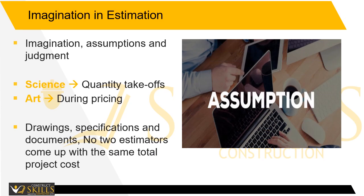Imagination in estimation. Estimating is both objective and subjective. It involves formulas and calculations to get lengths, areas, volumes, or weights, but it also requires imagination, assumptions, and judgment. It is science, though not fully — quantity takeoffs are more scientific while pricing is more of an art. The science portion involving formulas and math may be the same for everyone, but the art element is what differentiates the total cost of a project. Given the same set of drawings, specifications, and documents, no two estimators come up with the same total project cost.